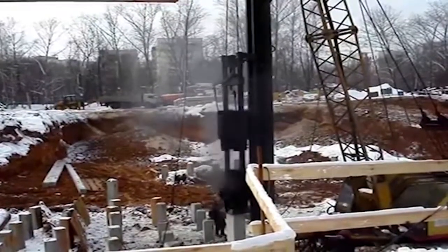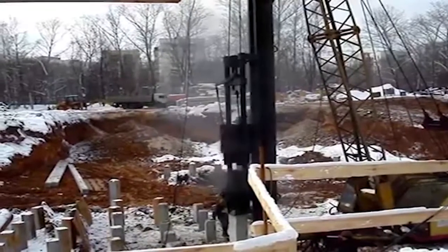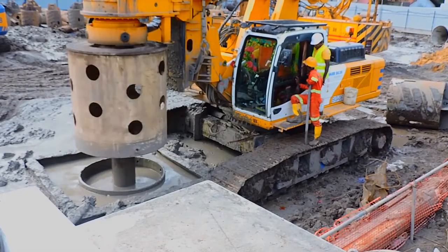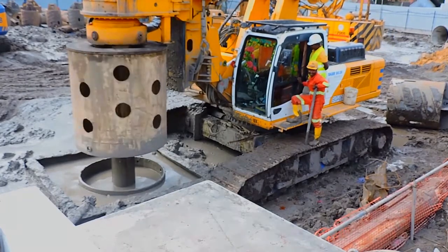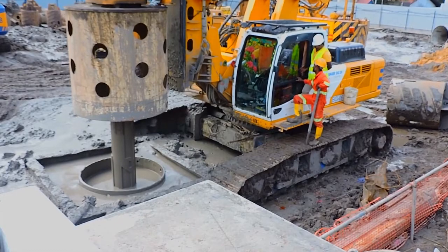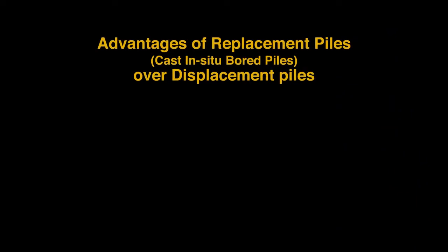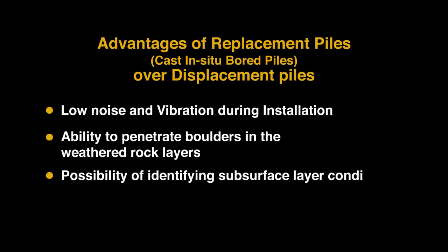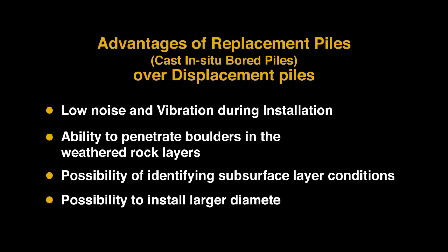Therefore, nowadays piling contractors use replacement piling instead of displacement piling. Replacement piling is totally different as the soil is removed by machinery and the pile is concreted at the site. There are few advantages of replacement piles over displacement piles, such as low noise and vibrations during installation, ability to penetrate boulders, possibility to identify subsurface layer conditions, and to install larger diameter piles. This replacement piling is often defined as cast-in-situ bored piling.